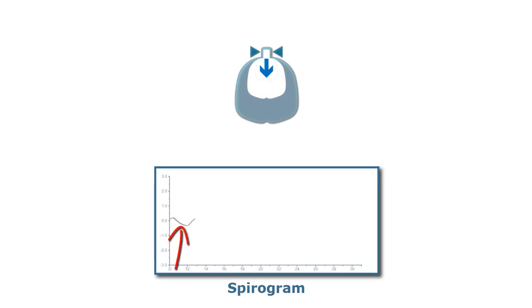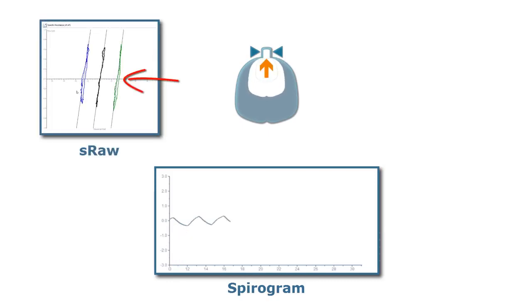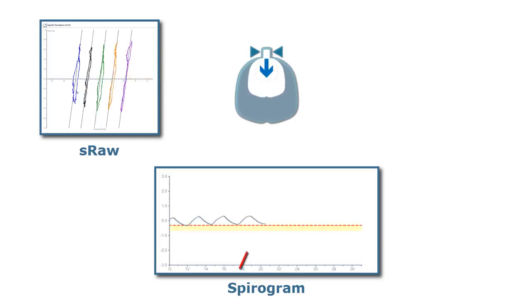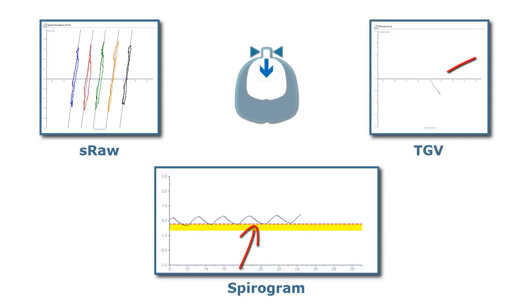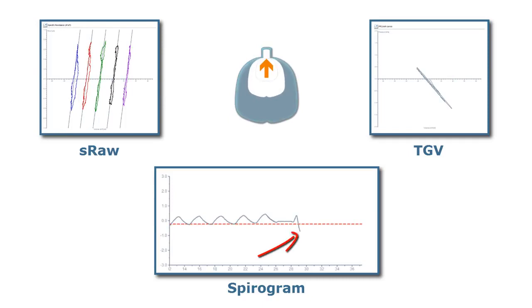The measurement starts with quiet breathing. During this phase, specific airway resistance is measured. After a stable breathing level is achieved, a shutter will be closed to determine thoracic gas volume. As soon as the shutter opens, a vital capacity is performed in order to calculate the absolute lung volumes.